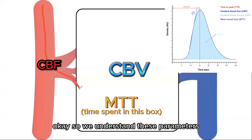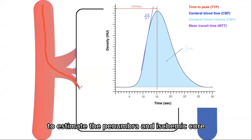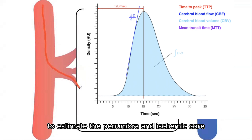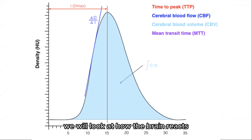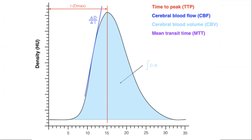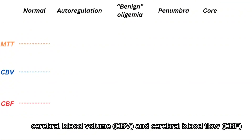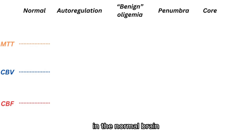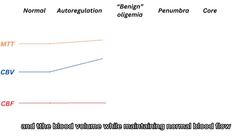We understand these parameters, but we need to apply them to estimate the penumbra and ischemic core. To understand these changes, we look at how the brain reacts when it's not receiving enough blood flow. Starting from the baseline mean transit time, cerebral blood volume, and cerebral blood flow in the normal brain: in the early process, autoregulatory vasodilation increases the MTT and blood volume while maintaining normal blood flow.